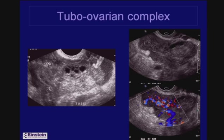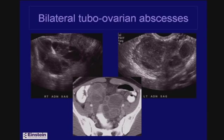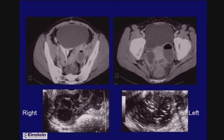A tubo-ovarian complex could look like this — you can make out the ovary with small follicles, and a very thick-walled fallopian tube filled with low-level echoes surrounding it. The tube curls around and is stuck to the ovary and is very hyperemic. Eventually, tube and ovary can no longer be distinguished, as in this patient with bilateral tubo-ovarian abscesses — confirmed on CT showing one on each side with intervening inflammation.